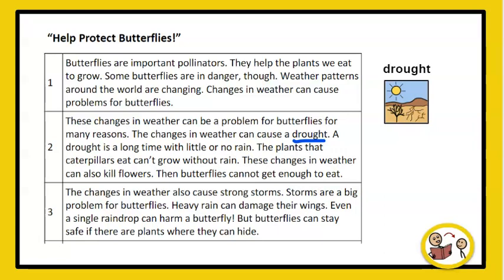The plants that caterpillars eat can't grow without rain. These changes in weather can also kill flowers. Then, butterflies cannot get enough to eat. The changes in weather also cause strong storms. Storms are a big problem for butterflies. Heavy rain can damage their wings. Even a single raindrop can harm a butterfly. But, butterflies can stay safe if there are plants where they can hide.